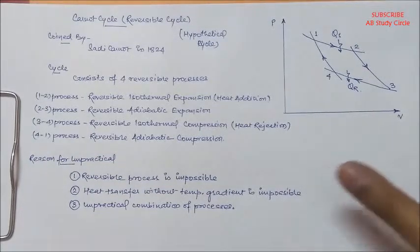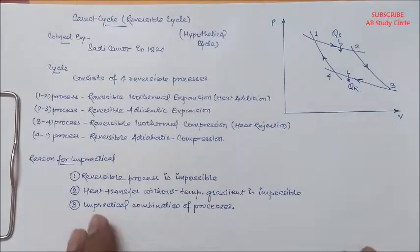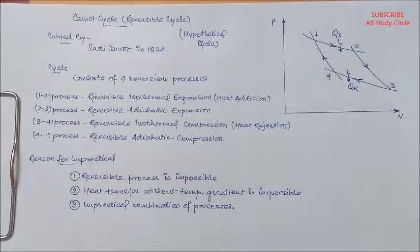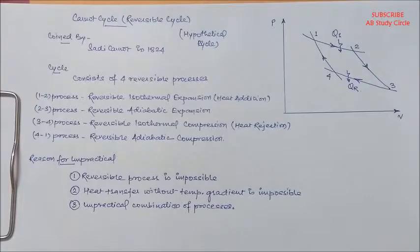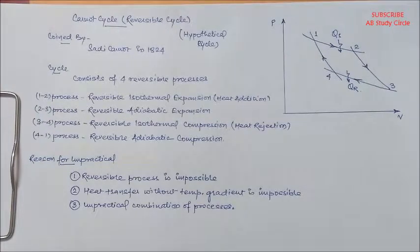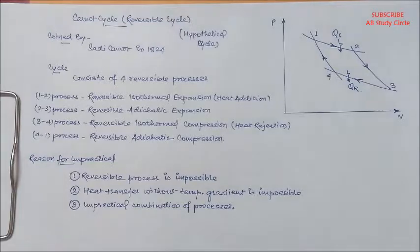The third point is impractical combination of processes. See, this process consists of two isothermal processes and two adiabatic processes. Let's visualize the isothermal process. Isothermal process is that process which is taken place very slowly so that the temperature remains constant.